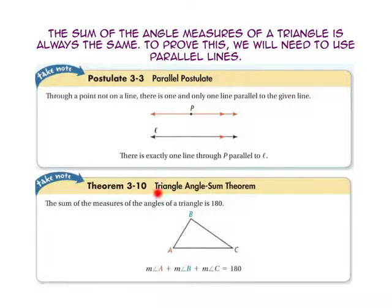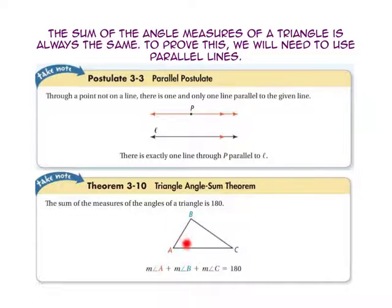Now let's look at the triangle angle sum theorem. The sum of the measures of the angles of a triangle is always 180 degrees. So the measure of angle A, plus the measure of angle B, plus the measure of angle C, will equal 180.